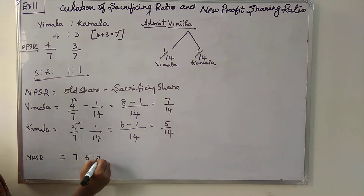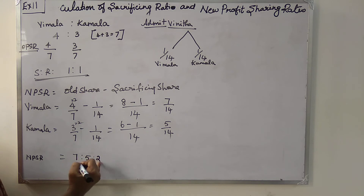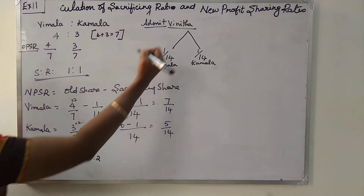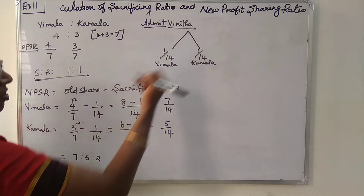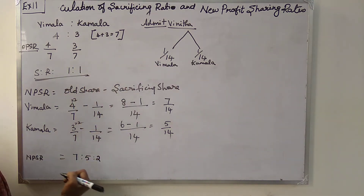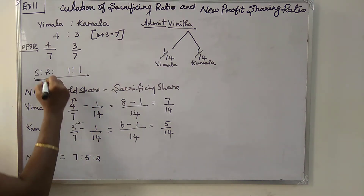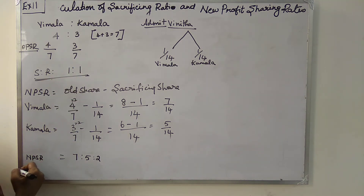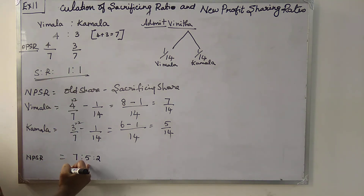The denominator is 14. Vinita gets 1/14 plus 1/14 from both of them, which is 2/14. So 5 plus 2 is 7, and 7 plus 7 is 14. The final new profit sharing ratio is 7:5:2.